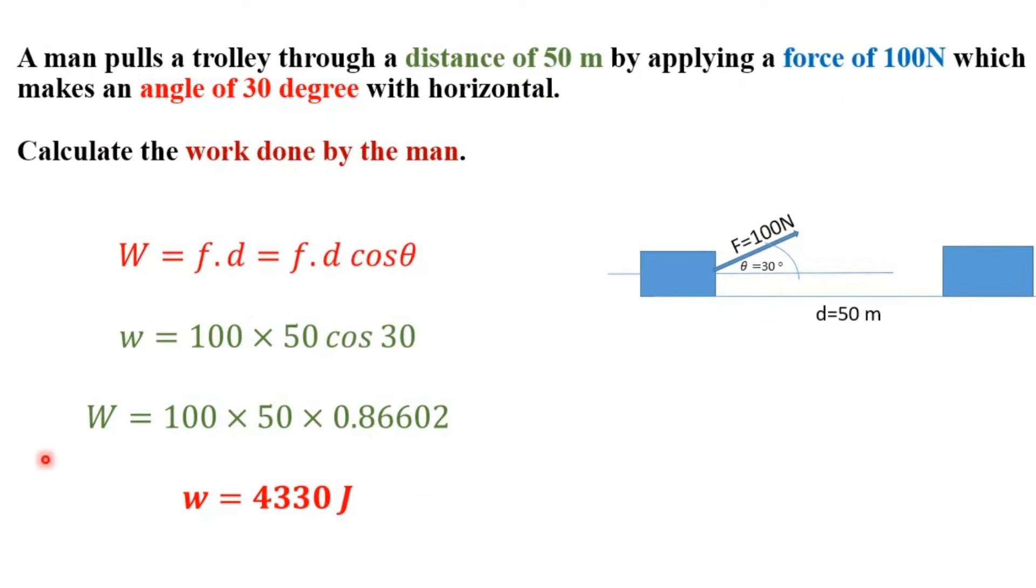Hello everyone, welcome to Easy Edu, and in our today's video we are going to solve this simple numerical. The problem is: a man pulls a trolley through a distance of 50 meters by applying a force of 100 Newton which makes an angle of 30 degrees with the horizontal.